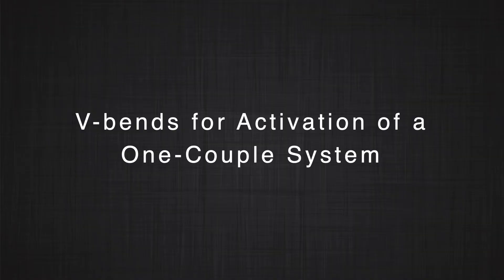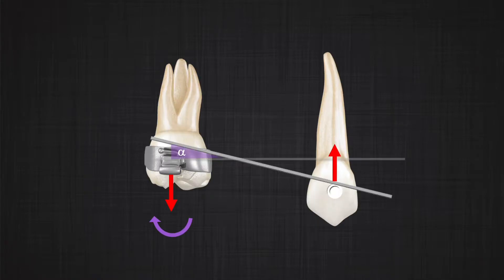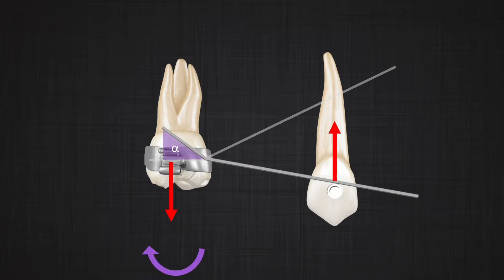So what else can we do? The other option is changing the angle of activation in the wire. How can we change the angle of activation? By introducing a V-bend inside the wire. When we introduce a V-bend, the angle of activation changes, and as the magnitude of the couple changes, the amount of forces that appear in our system will change.